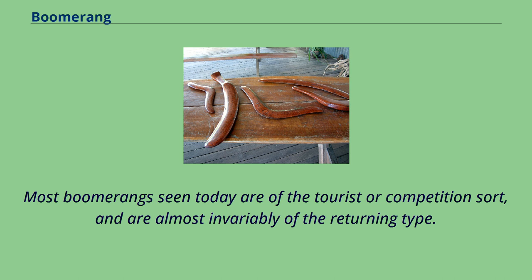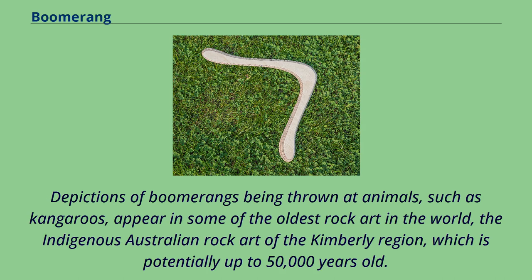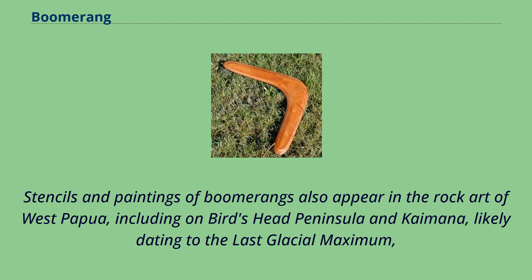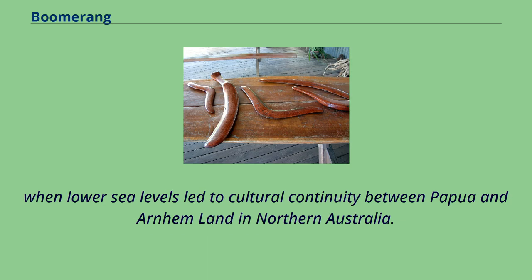Depictions of boomerangs being thrown at animals such as kangaroos appear in some of the oldest rock art in the world — the indigenous Australian rock art of the Kimberley region, which is potentially up to 50,000 years old. Stencils and paintings of boomerangs also appear in the rock art of West Papua, including on Bird's Head Peninsula and Kaimana, likely dating to the last glacial maximum, when lower sea levels led to cultural continuity between Papua and Arnhem Land in northern Australia.